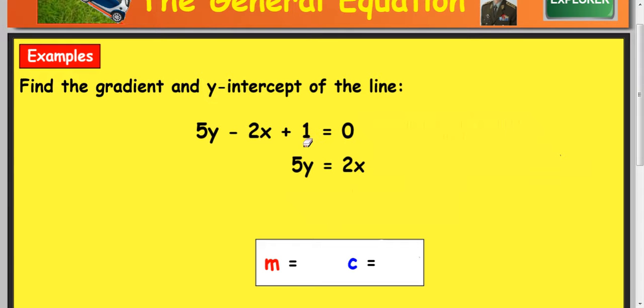Now, when you take the 1 over to the other side, you're taking away 1 from here and taking away 1 from here. So it becomes a take away 1. And when you take away 1 from that side, this just goes to 0. Rearrange to y equals mx plus c.